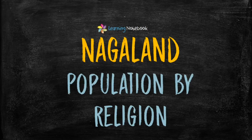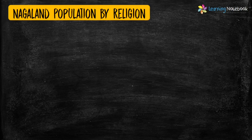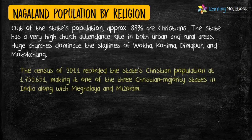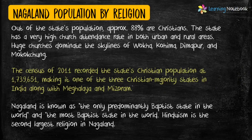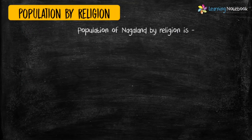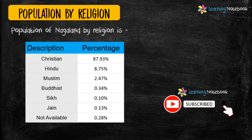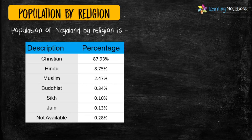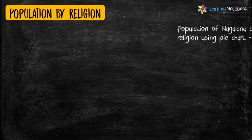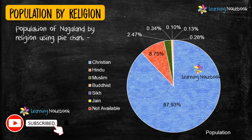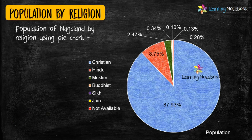Next, students, you can include population of Nagaland by religion in your maths art integrative project. If you are enjoying watching videos on our channel then do like, share and comment on our videos, and do not forget to subscribe to our channel Learning Notebook. A pie chart is another beautiful way to represent the given data, so you may use a pie chart to show population of Nagaland by religion.